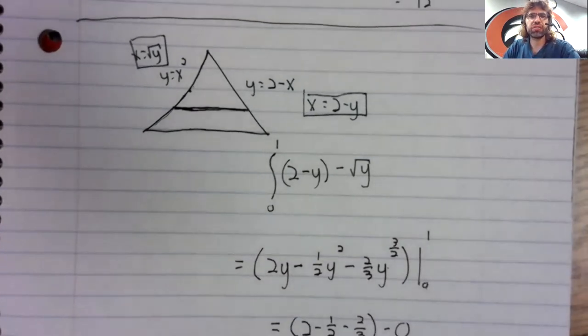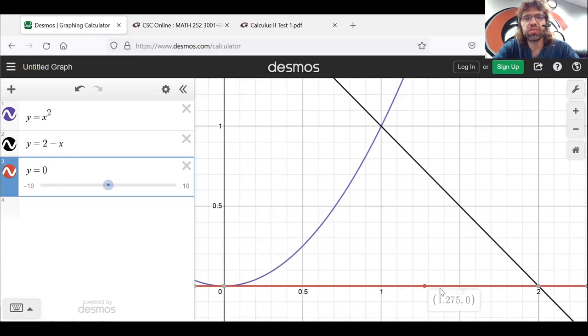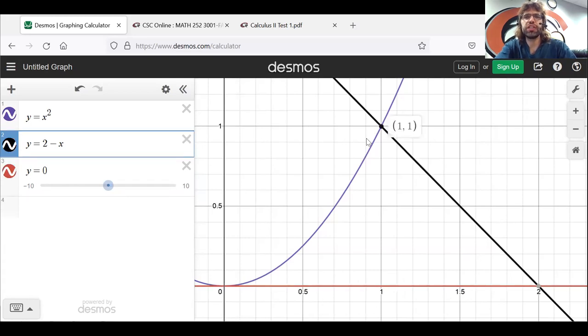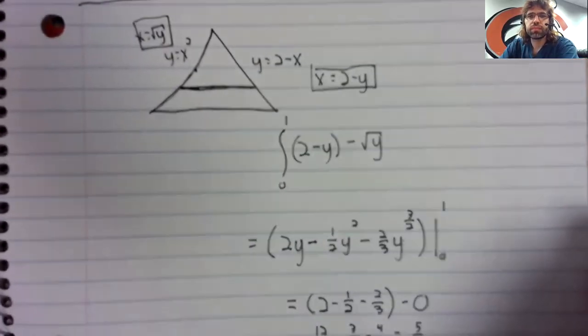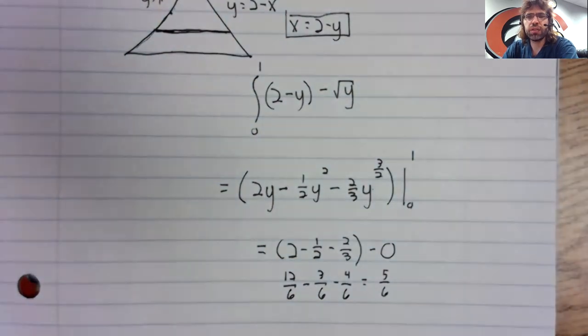And then it's the right curve minus the left curve. The limits of integration: this line is y equals zero, the upper limit of this region is y equals one. So we're integrating from zero to one.